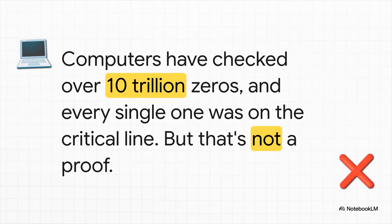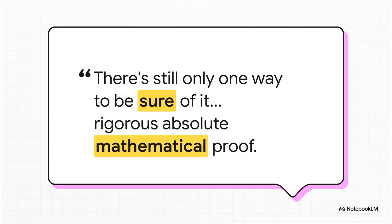And you better believe we've looked. We have used supercomputers to find and check the location of the first 10 trillion non-trivial zeros. And every single one of them was perfectly exactly on that critical line. But, and this is a huge but, in mathematics, 10 trillion examples is not a proof. There could always be one more, way out there in infinity, that's off the line. Brute force just will never be enough. There is only one way to settle this, the same way it has been done since the ancient Greeks, with a rigorous, logical, absolutely airtight mathematical proof that shows it must be true for all the zeros, all the way out to infinity.